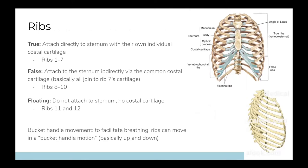There are two rib classification systems: true/false/floating, and typical versus atypical. For true, false, and floating - it's about how ribs attach to the sternum, all via costal cartilage. True ribs, ribs 1 to 7, each attach directly to the sternum with their own individual costal cartilage. False ribs attach to the sternum via a common costal cartilage - they merge into a blob and then attach. Floating ribs don't attach at all. So: true = attached, false = attached with friends, floating = not attached.